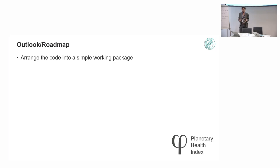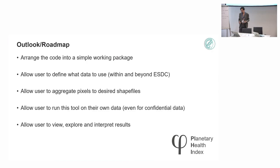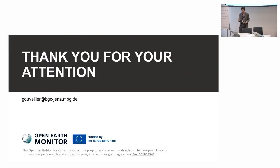And we have a bit of an outlook roadmap for what comes ahead. We're going to arrange this code into a simple working package. And that would allow the user, in our case, the stakeholder, the central bank, could define what data to use. So partly from the data cube that we have, they could choose or they could add layers. There would be a tool also to aggregate to shape files, so that people who are not used to geospatial and gridded data could do that. The idea will be that they run this on their own systems and then give us feedback as well for the confidential data. We would explore and interpret results and test it with our stakeholder. So thank you for your attention. And hopefully that was understandable and making questions for discussion.